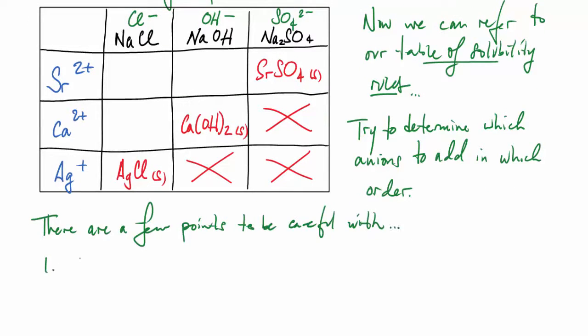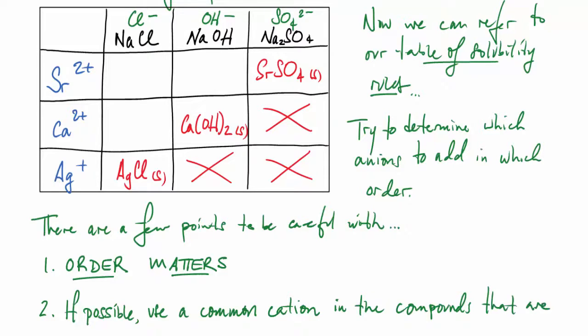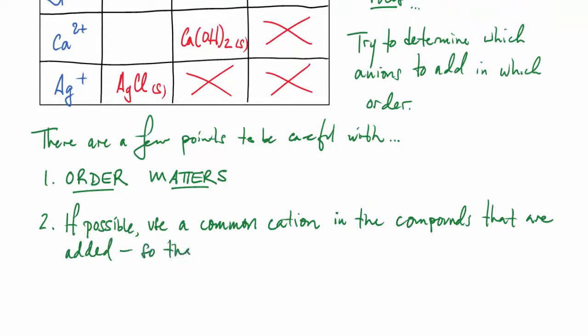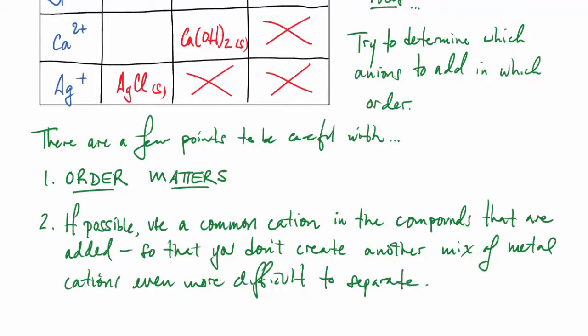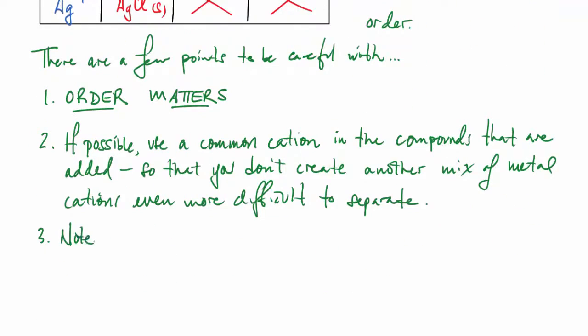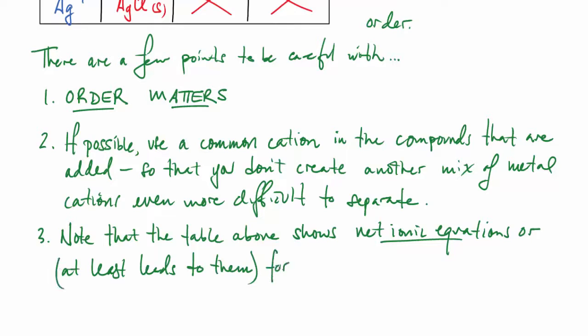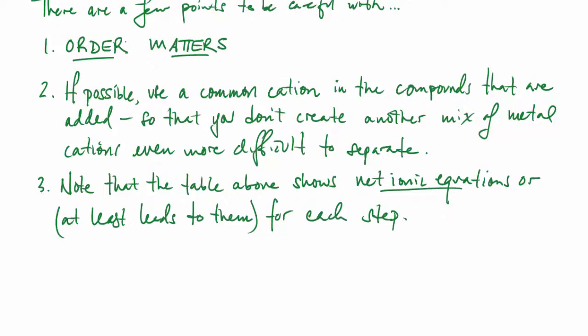There are a few points that we need to be very careful with. First, order really matters—for example the sulfate with the strontium and the calcium. Second, if possible use a common cation in the compounds that are added. In this case we used sodium so that you don't create just another mix of metal cations even more difficult to separate. Also notice the table above gives you the net ionic equations, or at least leads to them, for each step.